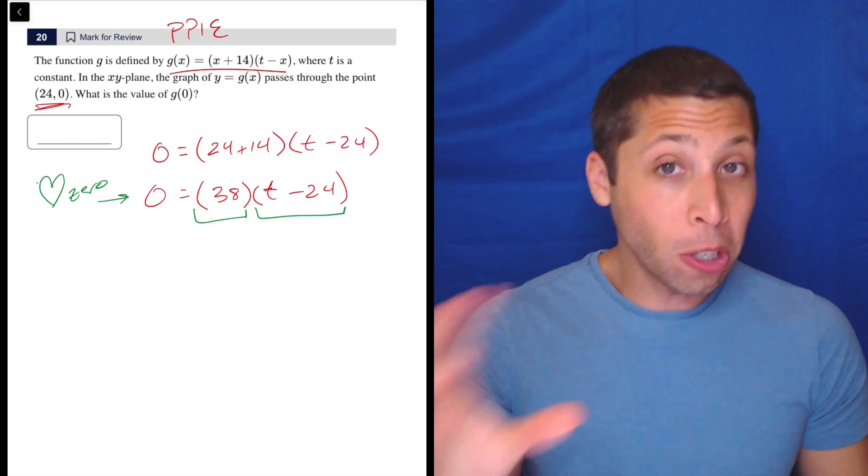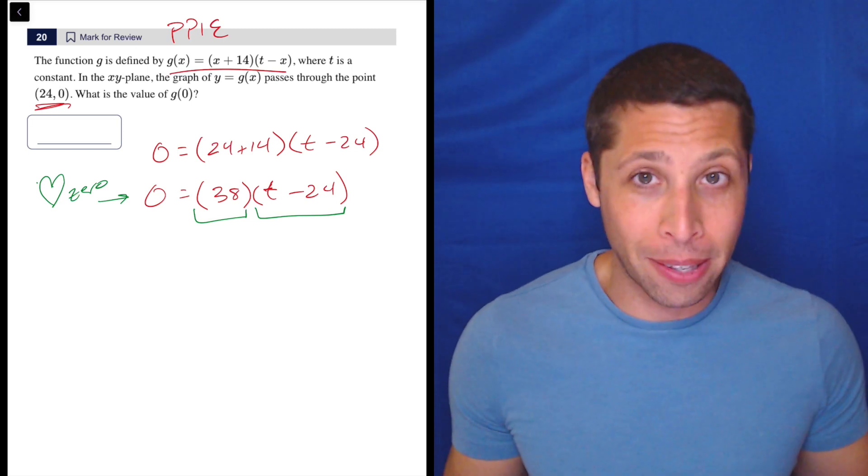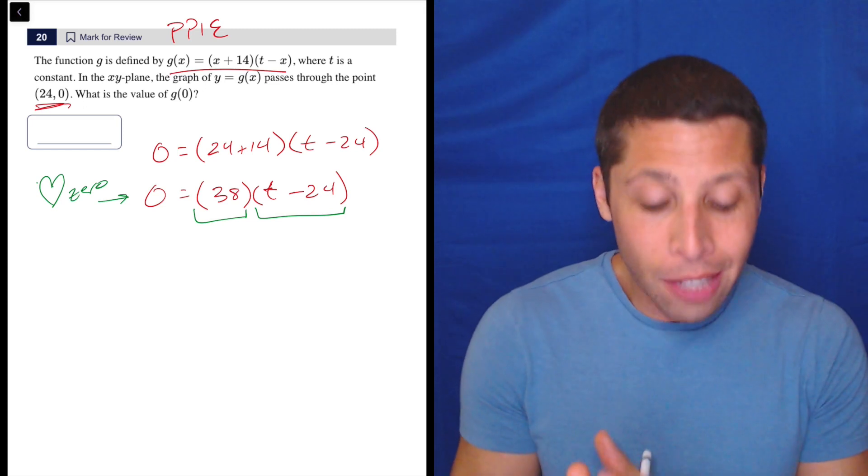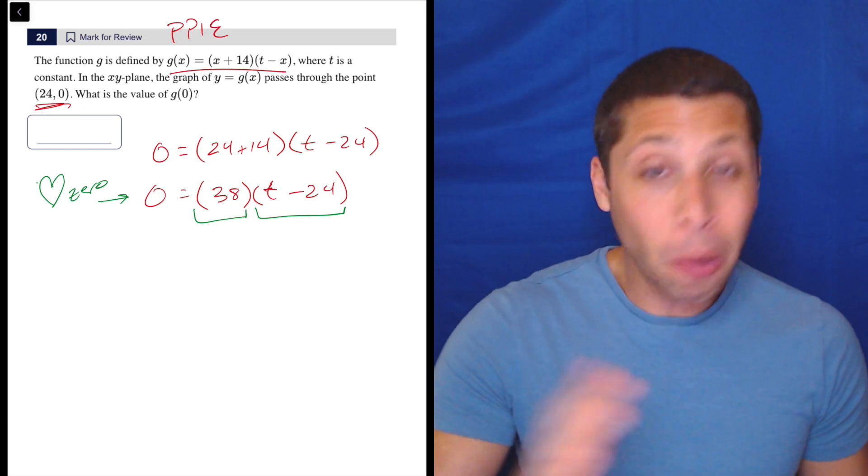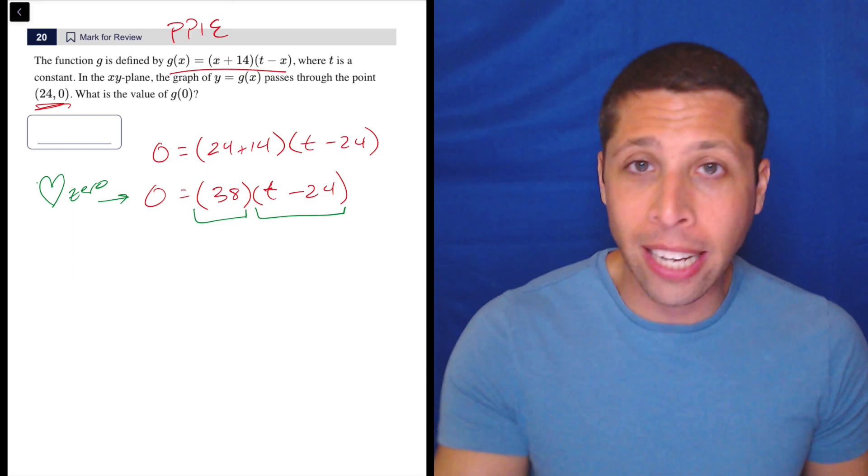So if the first part were zero, then it would knock out the end part. And so we wouldn't even care what happens in the second piece. But we can see from the numbers that we plugged in, the first part isn't equal to zero, it's equal to 38. So yes, like I said, we could distribute it in and solve for T.